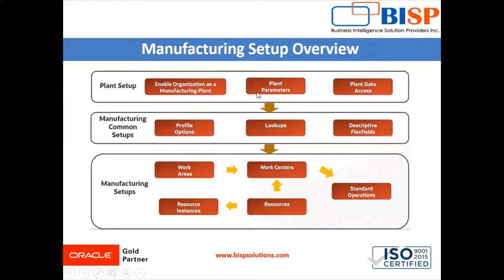Next we have to define data access for users. After assigning the roles to the user, we have to provide data access and we use the manufacturing plant as a security context. Under the common setup we define profile options, lookups, and descriptive flexfields. Profile options are used to manage configuration data centrally and determine how the application runs — for example, controlling user preferences such as appearance, language, currency, and similar settings. Under manufacturing, profile options include site-level hours, unit of measure, and default manufacturing plant organization.